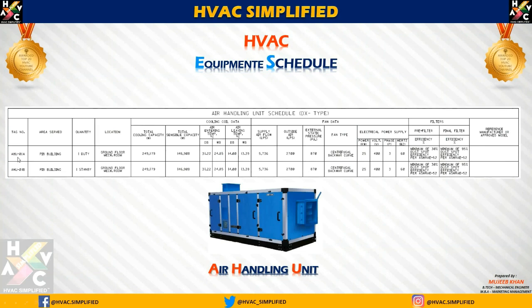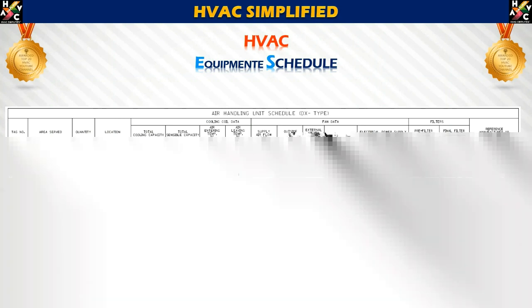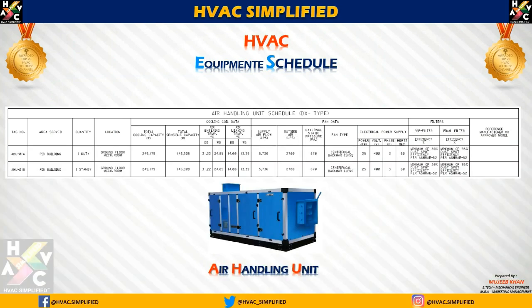यहाँ पर एक Example लिया हुआ है जहाँ पर हमने Tag Number 1A and 1B दिया हुआ है। यह एक Building के अंदर हैं, इन दोनों की Quantity 1 है, Location Ground Floor Mechanical Room है। Air Handling Unit को एक Confined Space यानि कि एक Room में Install किया जाता है जैसे कि Mechanical Room। Cooling Coil Data में Total Capacity and Total Sensible Capacity Watts में ली हुई है, जो HVAC Load Calculation अनुसार measure की जाती है। Air Entering Temperature और Air Leaving Temperature, Coil Entering and Coil Leaving Temperature, Cooling Coil Selection के लिए रहती है।